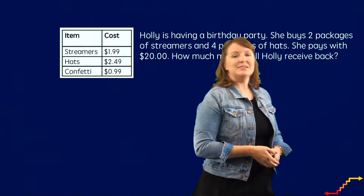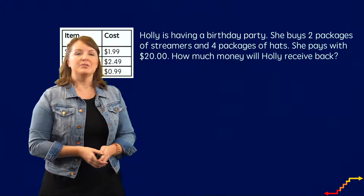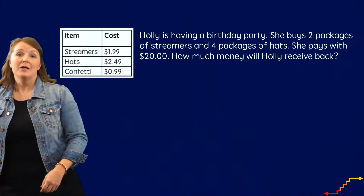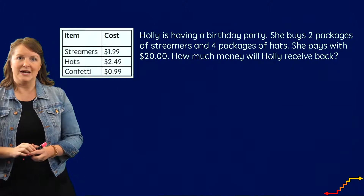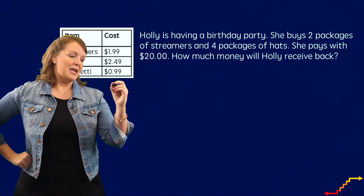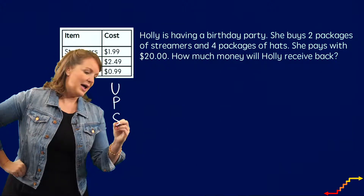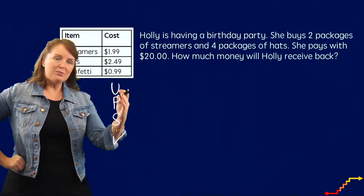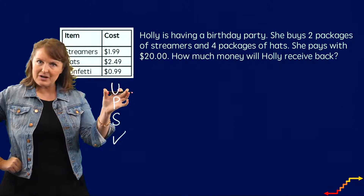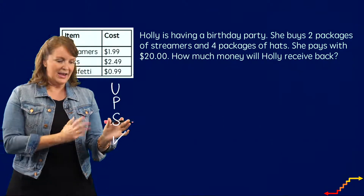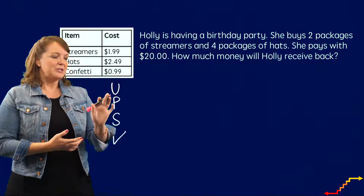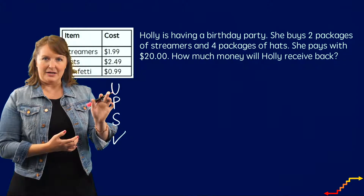Here is a word problem. I see a mix of numbers and words, and whenever I see a mix of numbers and words, that means we're going to use our attack strategy. The attack strategy we're going to use today is UPSCheck. I always like to write my attack strategy here, so I remember: first I'm going to understand, then we're going to make a plan, then we're going to solve it, and then we're going to check our work. So let's understand this problem by reading it.